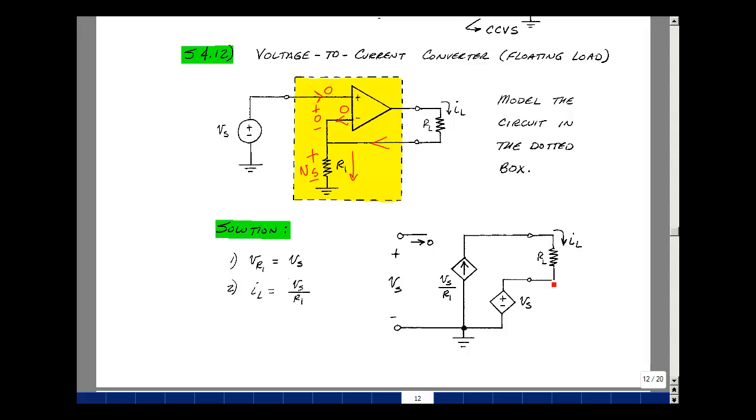And then the current that flows in here, well, it can force with a current source that's controlled by the voltage V sub S. So V sub S over R1. Between these terminals, we get the same effect.